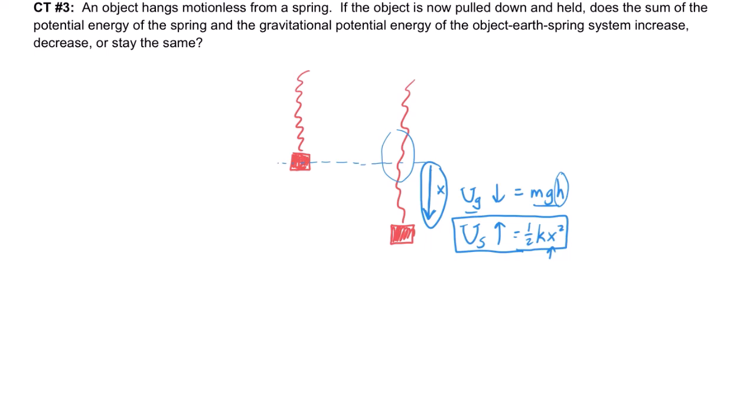So that means that the change in the elastic potential must be larger than the change in the gravitational potential. Therefore, the total energy, the total sum, which is what it's asking, the gravitational plus the elastic potential, must increase.